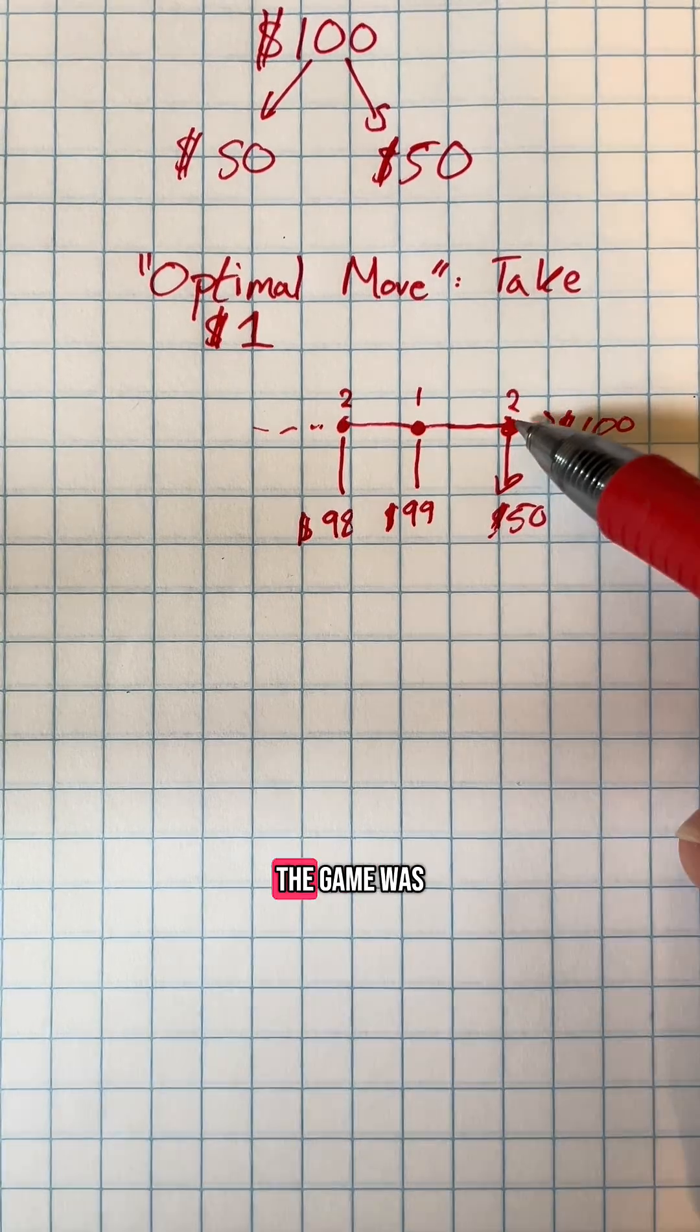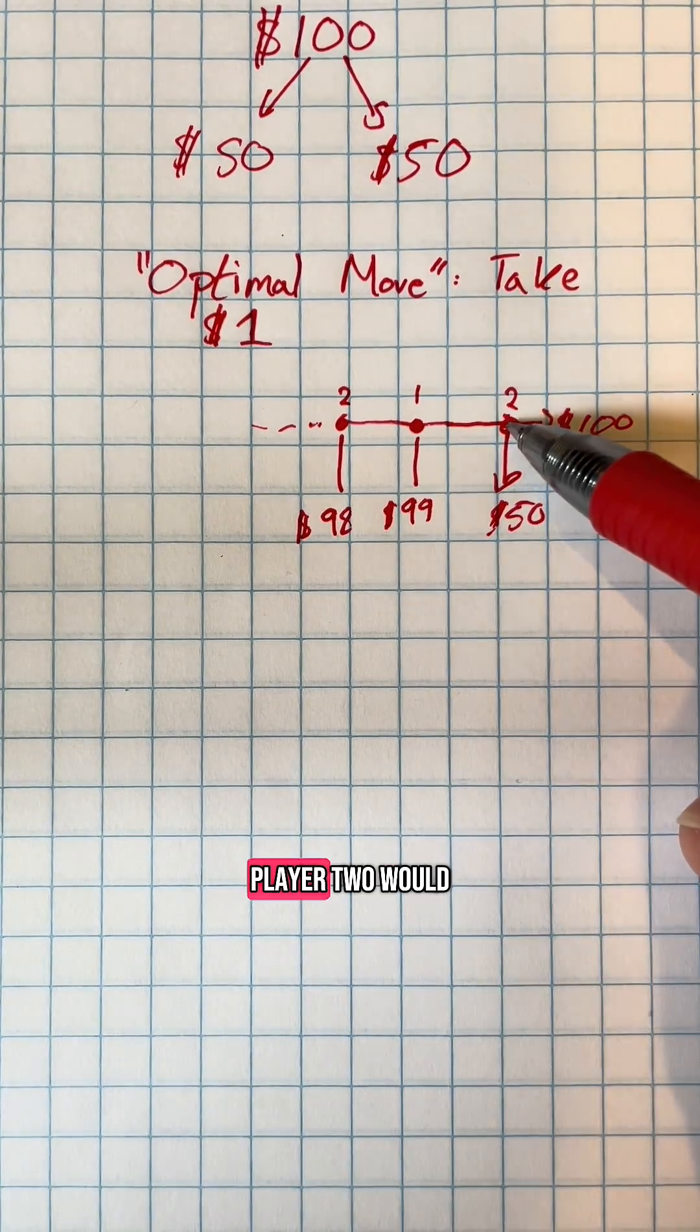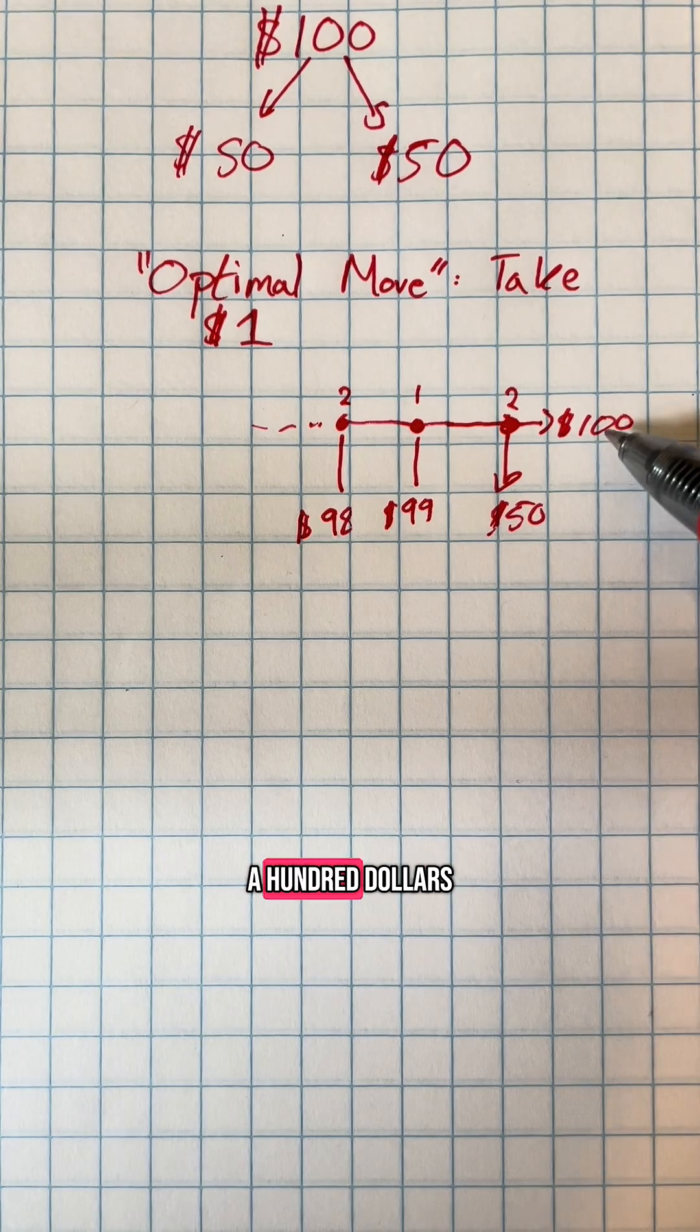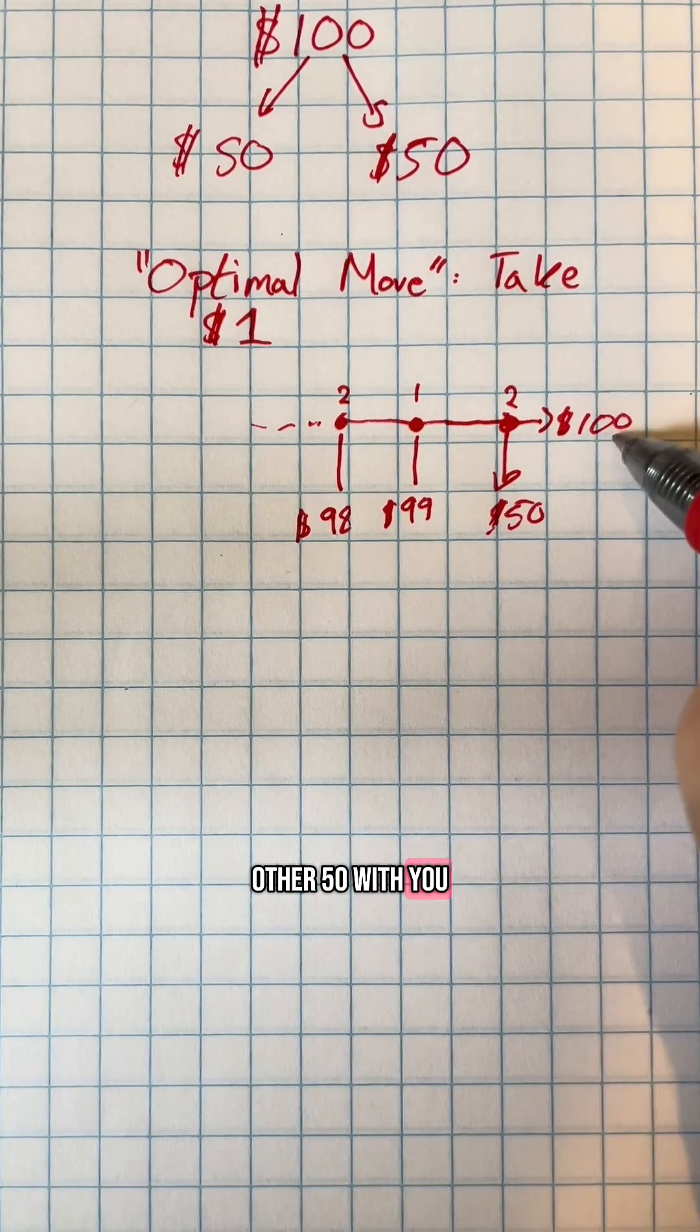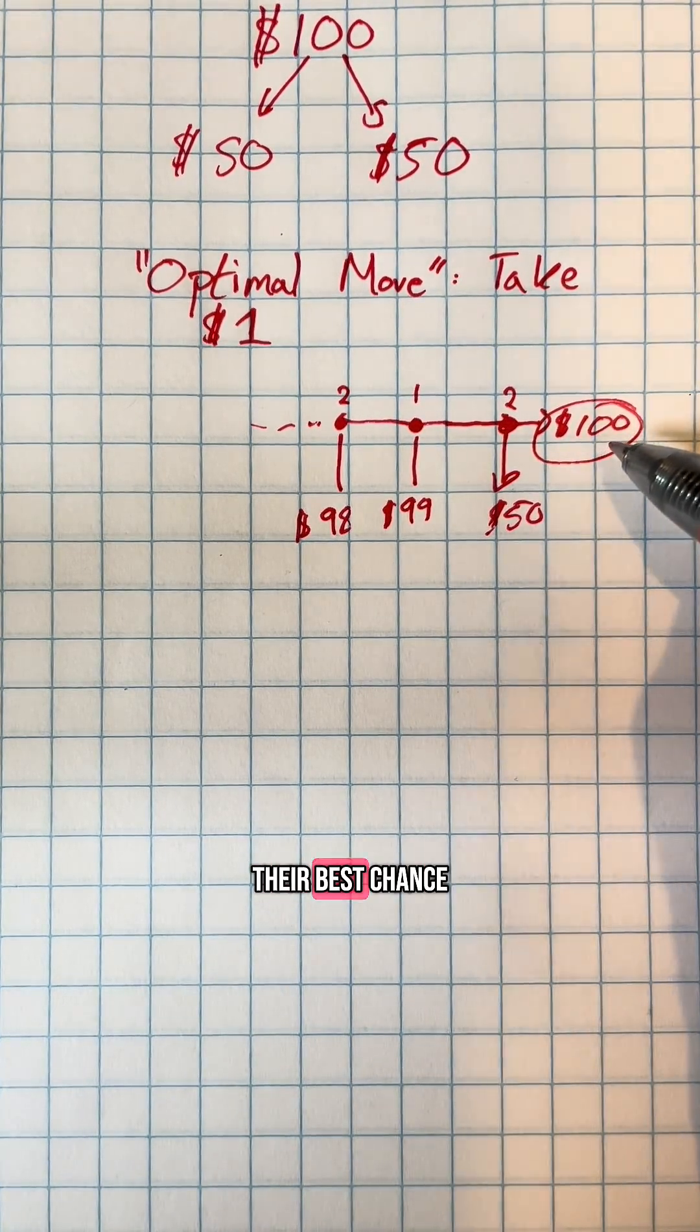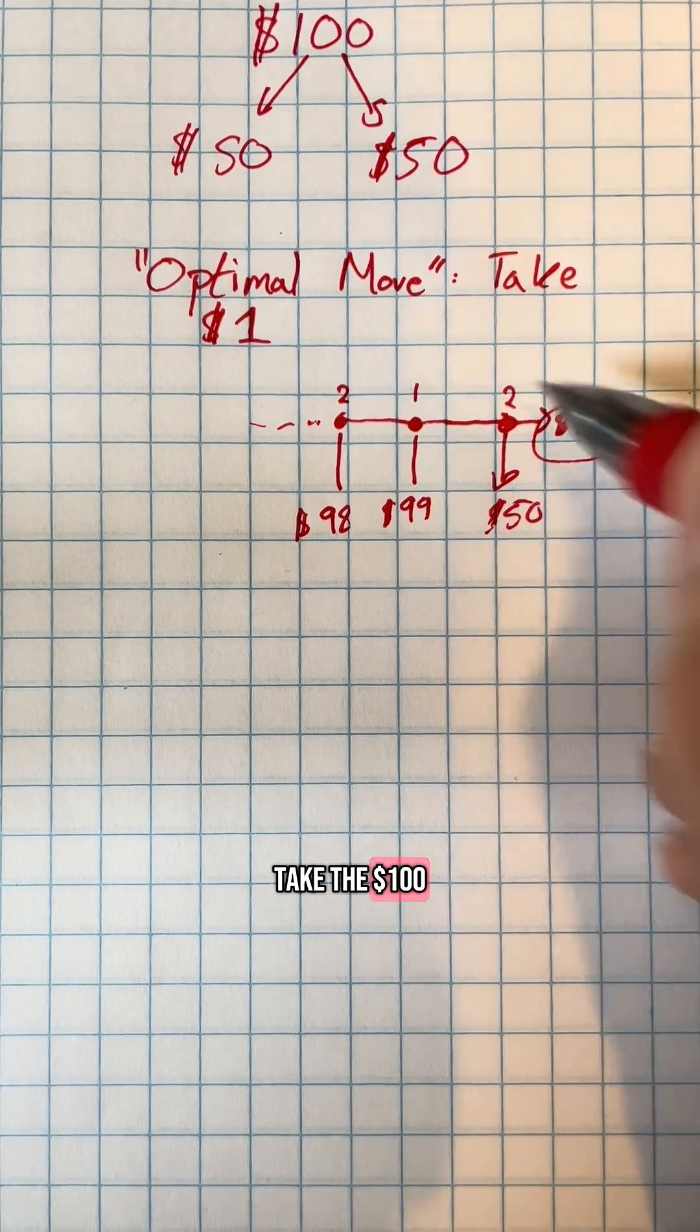The reason we can see this is that if the game was to get all the way to the end, player two would have the option between either taking a hundred dollars for themselves, or taking fifty dollars and splitting the other fifty with you. And since a hundred dollars is more than fifty, they would, in their best interest, take the one hundred dollars.